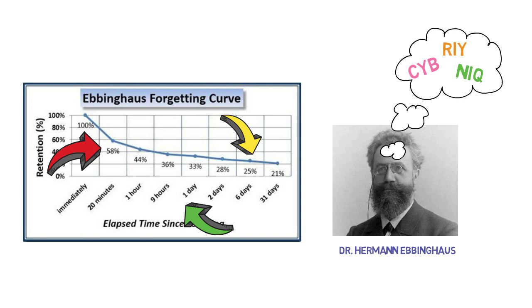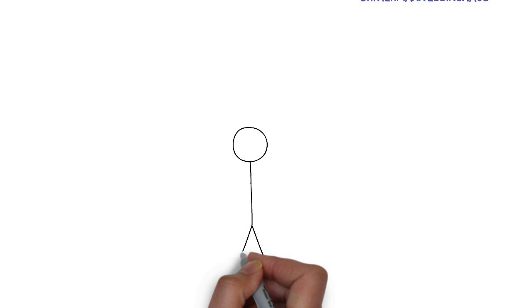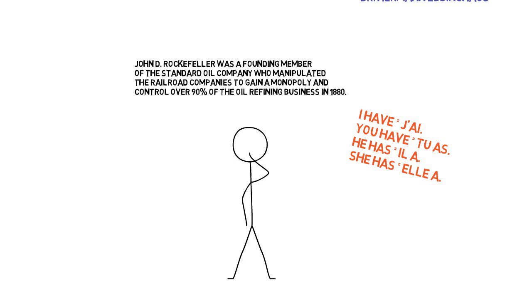We call this the forgetting curve. So when a teacher tells you something new that you don't understand, it might just as well be gibberish and nonsense that you are three times as likely to forget.